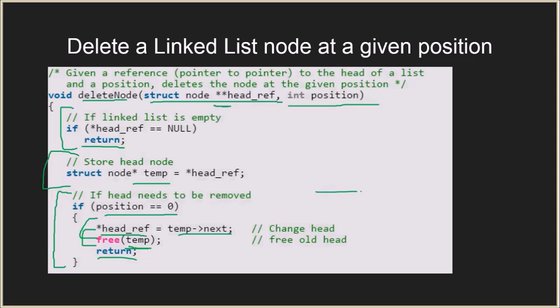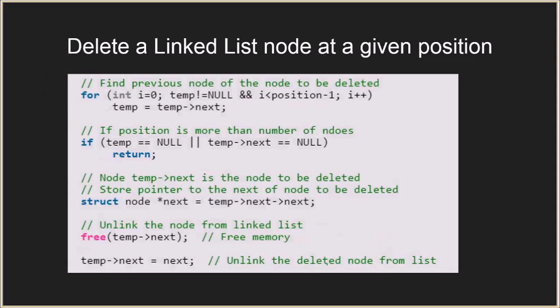If we have to delete a node in the middle of the linked list, we need to find the previous node of the node to be deleted. For that, we run a for loop position minus one times.